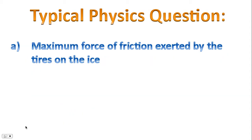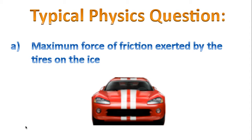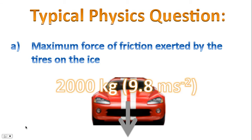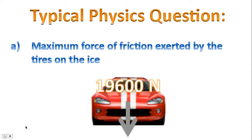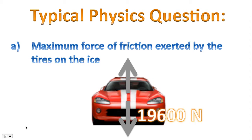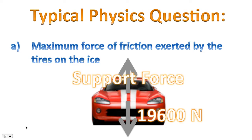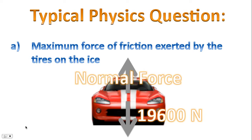Let's look at Part A — the maximum force of friction exerted by the tires on the ice. For this, we need a diagram. The force pointing downwards represents gravity, given by Mg: 2000 kg times 9.8 meters per second squared, so the force of gravity is 19,600 newtons, also known as the weight. In addition, we have a force pointing upwards, commonly called the support force or normal force.